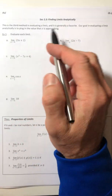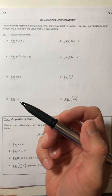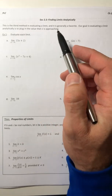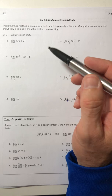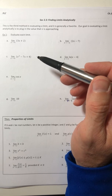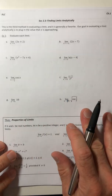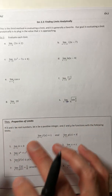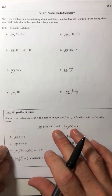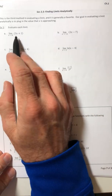Hey there campers, today we are looking at finding limits analytically. This is our third method in evaluating a limit, and this one is kind of a favorite. Using a limit with a graph is probably number one, and this one's a close second. The table, not so much. The reason why people tend to like this method is because sometimes it can be really fast, and it actually feels like you're doing something. Whereas with a graph it's like, wait, what are we doing? Here it's more algebra.